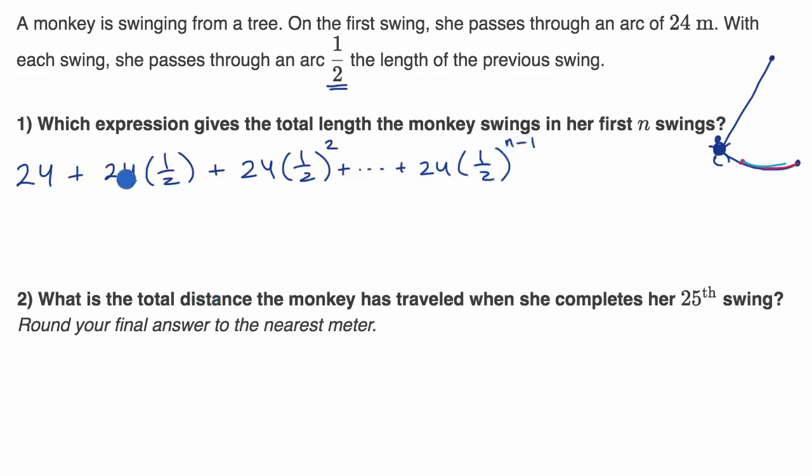Notice, after two swings, we only get to 24 times (1/2)¹. After three swings, to the second power. So after n swings, to the (n-1) power.